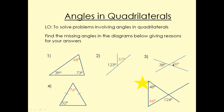When two lines cross, the opposite angles are equal. So if that's 38 degrees, that's going to be 38 degrees as well. But this one is an isosceles triangle. For an isosceles triangle, two sides are equal and two base angles are equal as well.